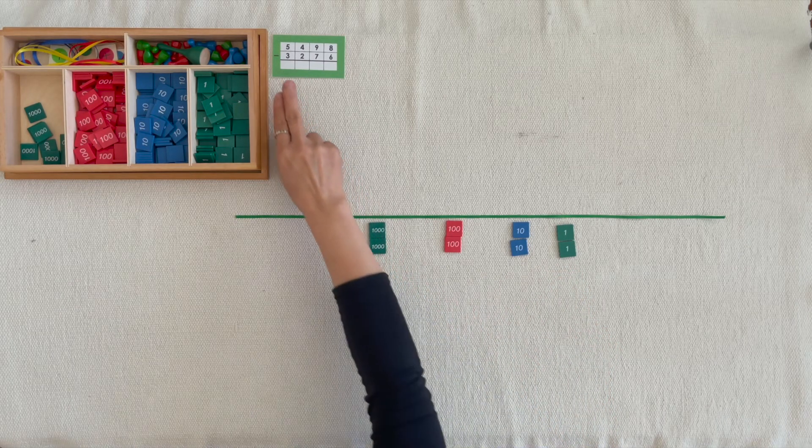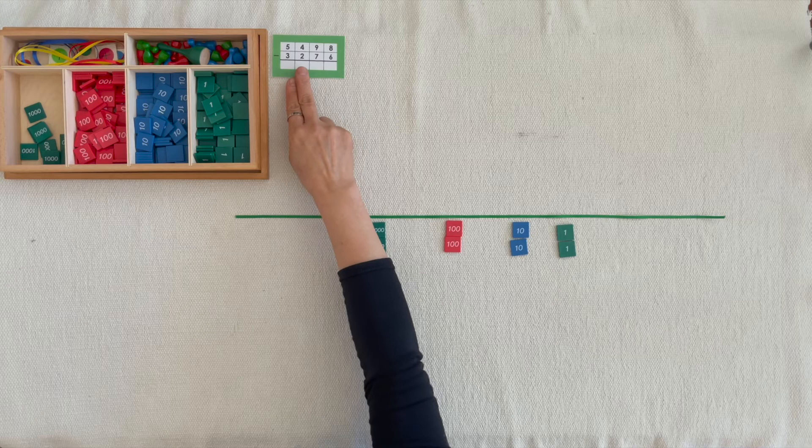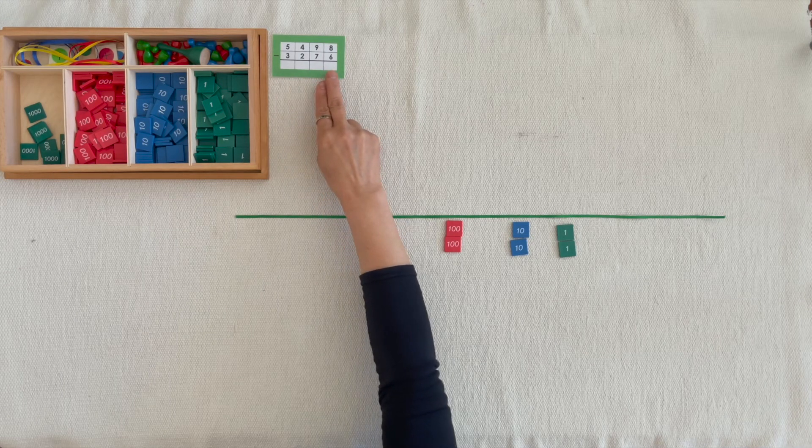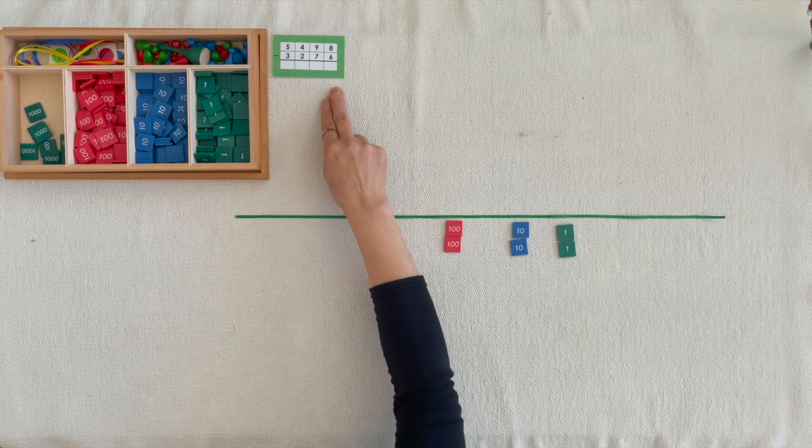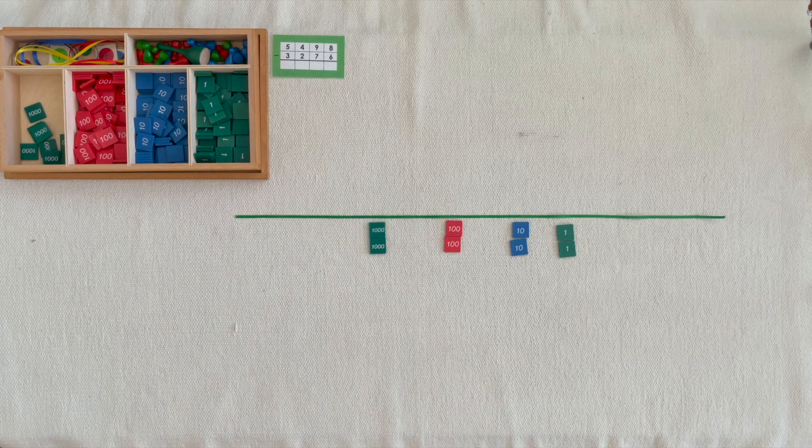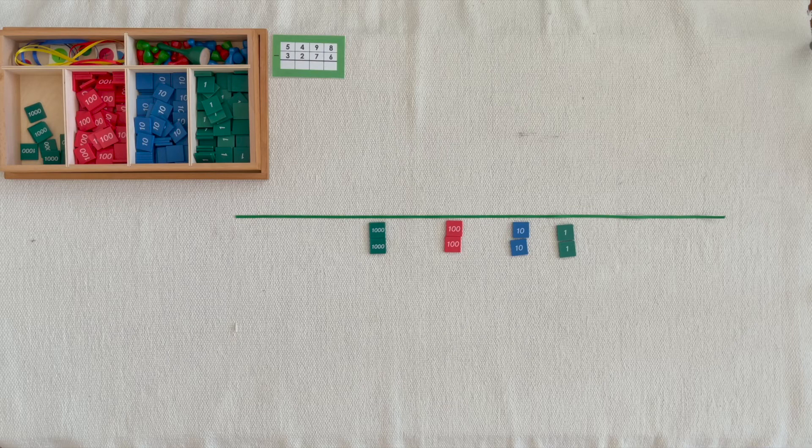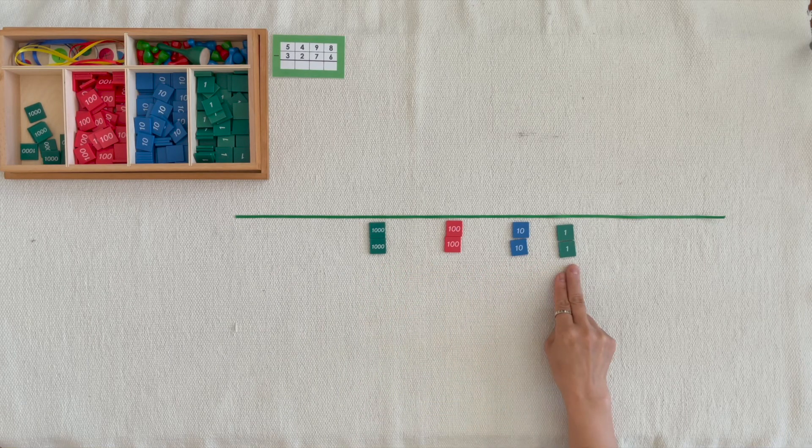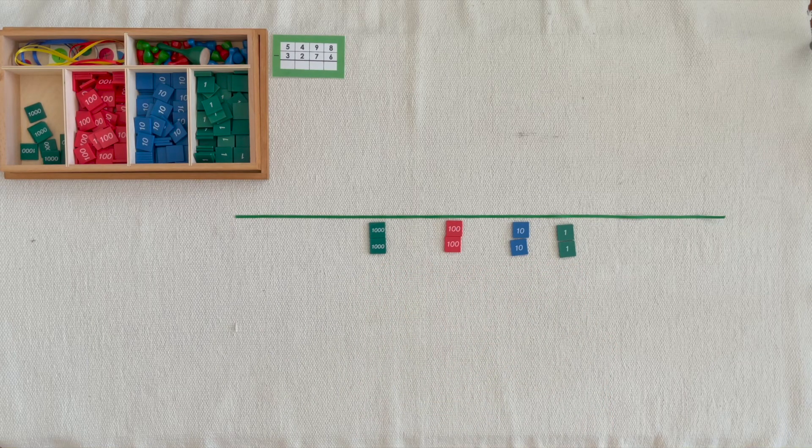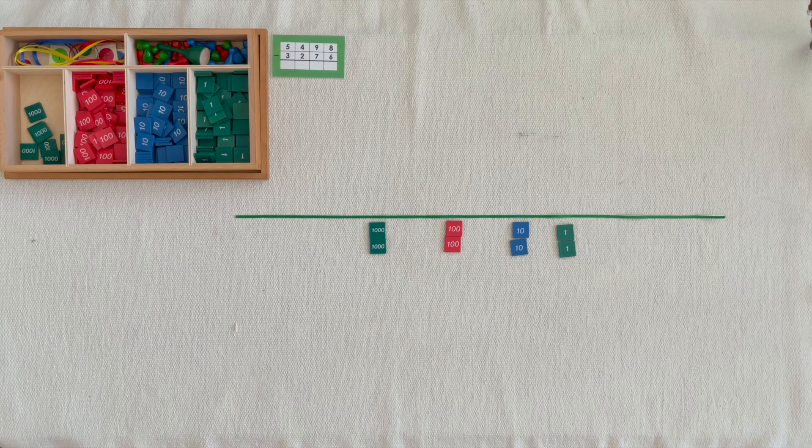I put out 5,400s, 9,10s, 8 units and you took away 3,200s, 7,10s, 6 units. When we counted the amount that was left, we counted the difference of 2 thousands, 2 hundreds, 2 tens, 2 units. This operation is called subtraction.